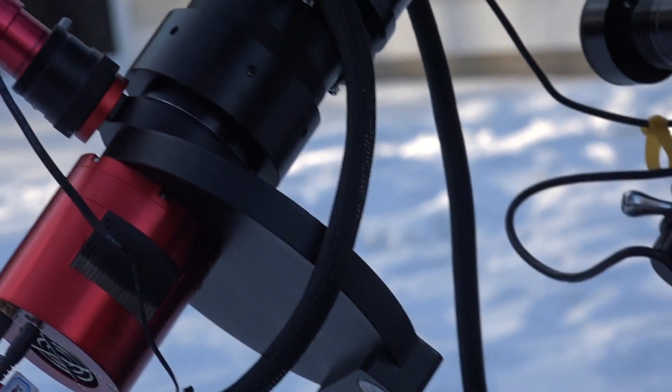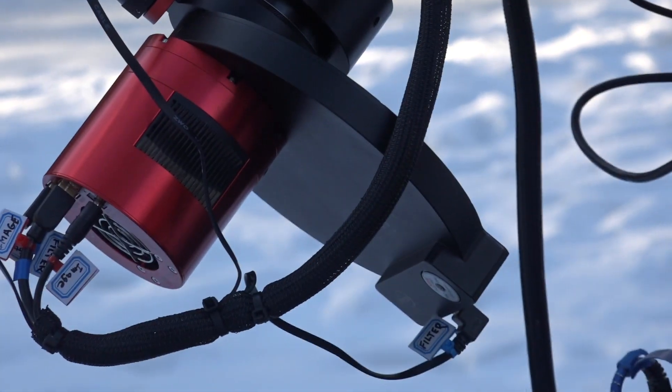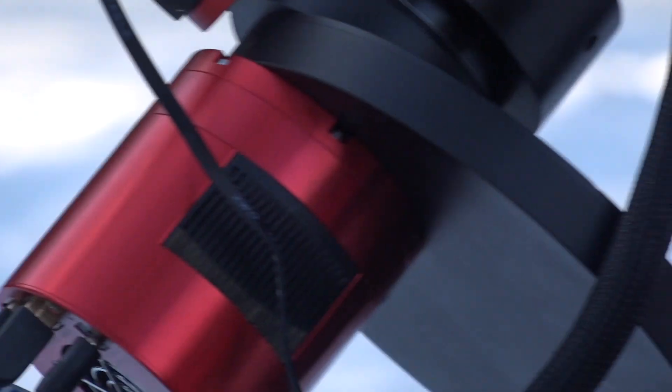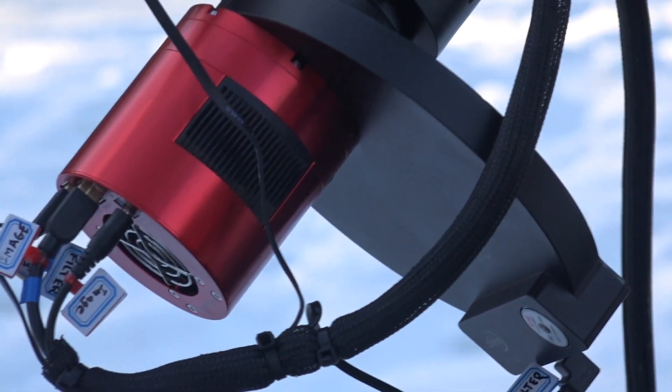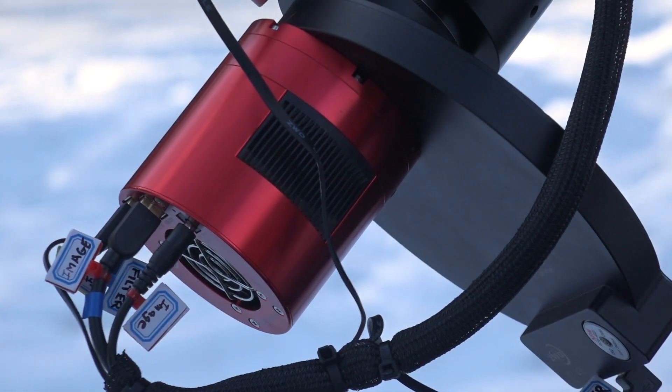Directly behind it is my ASI 6200 MM main imaging camera. It's monochrome and it's cooled and can bring the temperature of the sensor 35 degrees below Celsius.